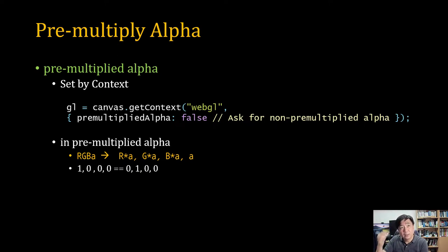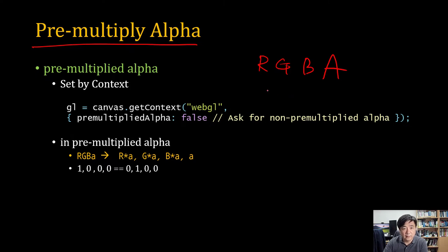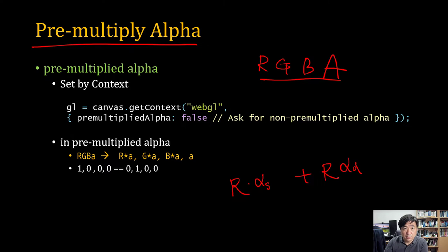There is another thing to learn: pre-multiplied alpha. We express color with RGBA. In blending, most blending functions work like this — for example, the red channel output is the red source multiplied by alpha source, added to the red destination multiplied by (1 minus alpha source). Most blending functions need to multiply by alpha values. So if the alpha and color values are pre-multiplied, it is a much more efficient way to calculate blending.